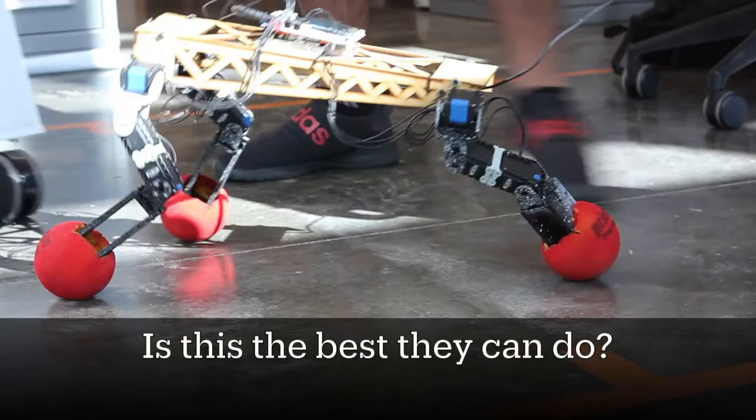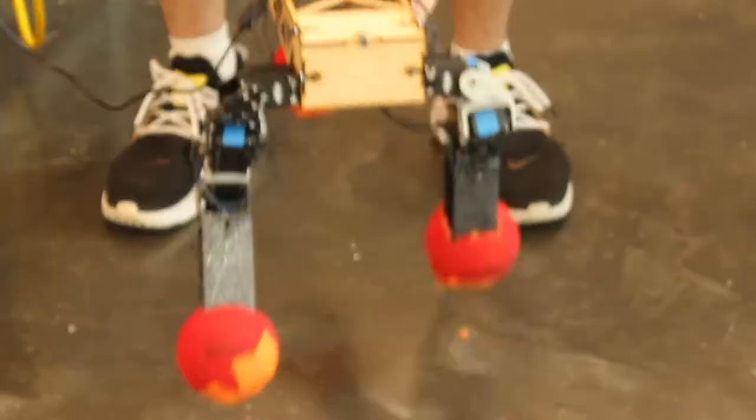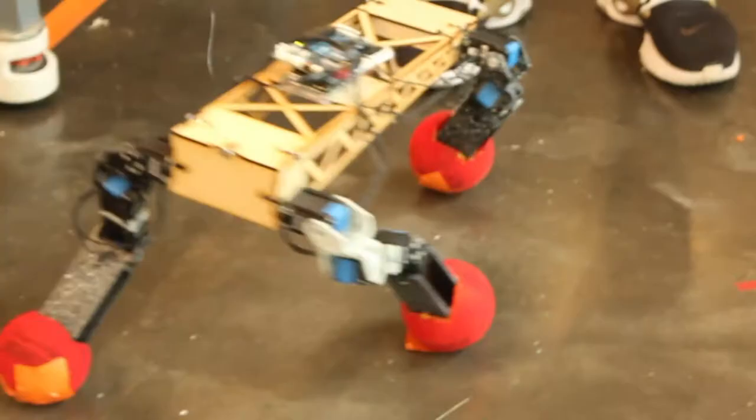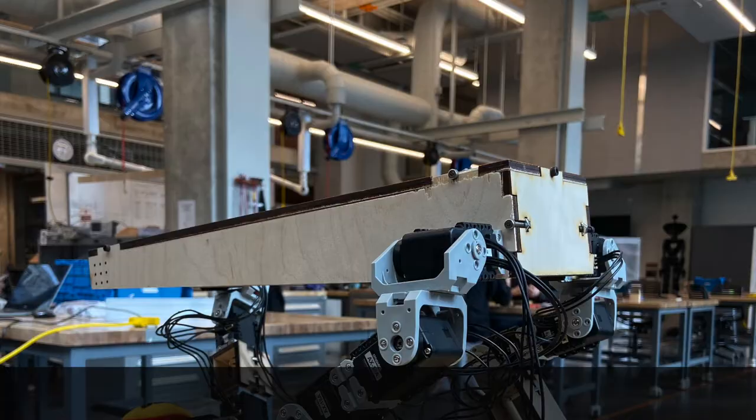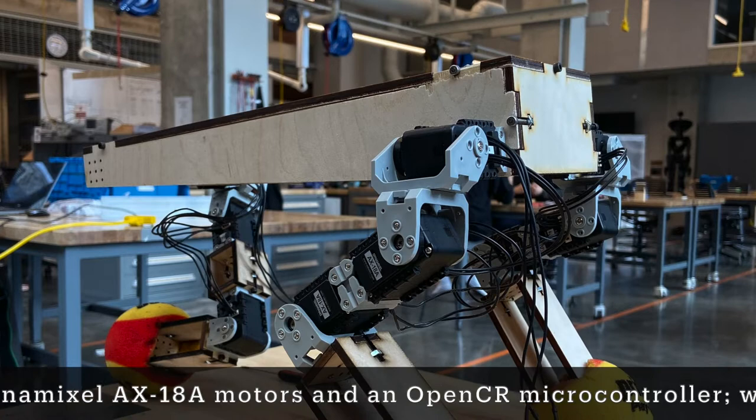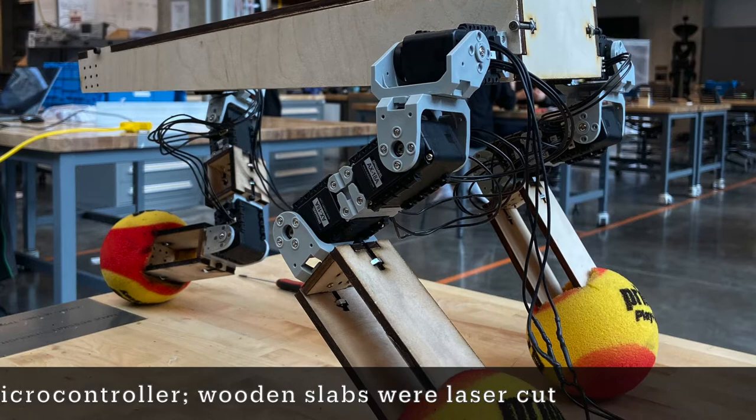To construct our robot, we used nine Dynamixel motors with three on each leg, each comprised of a hip, knee, and elbow joint per leg, and some laser-cut wooden pieces put together that were inspired from the structure of a three-legged dog. These three legs were connected to an OpenCR microcontroller on top of the dog, which communicated the individual joint positions of each leg to each of the nine motors, which had accurate in-built position-based controllers.